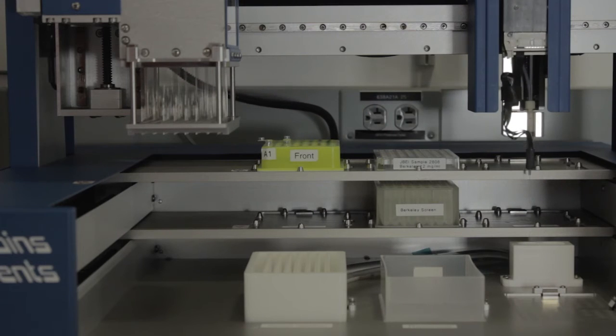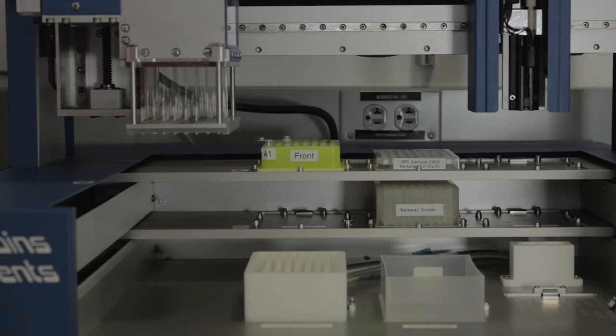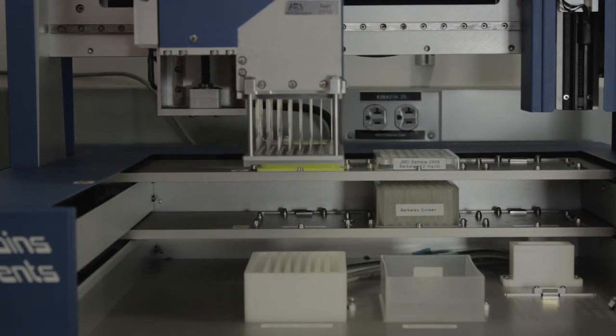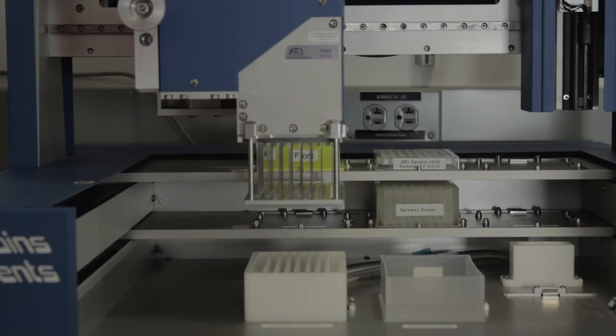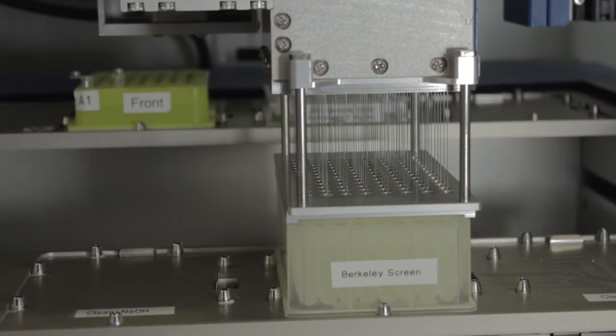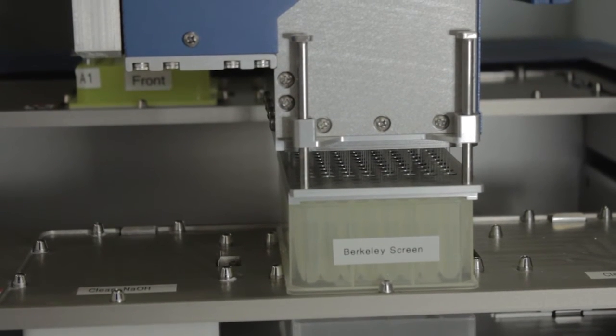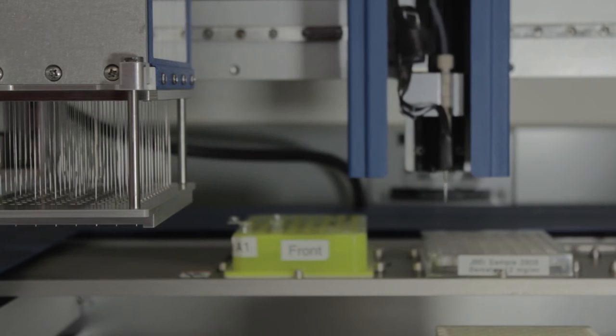In order to grow a protein crystal, we use crystallization robots. With these robots, we can screen thousands and thousands of conditions to find a perfect crystal. Good crystals have a nice shape and edges, and using these crystals, we can expose them to X-rays and solve the structure.